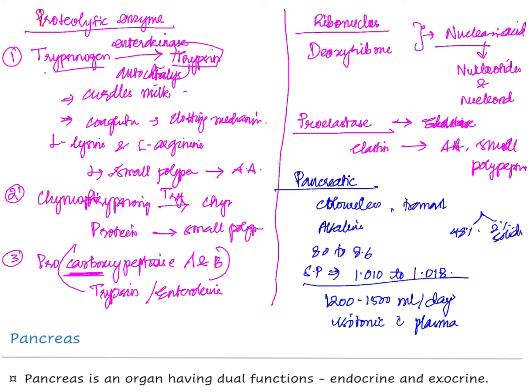The pancreatic juice contains nearly 98% water and 2% solids. The solids include enzymes and electrolytes. The electrolytes consist of cations — sodium, calcium, potassium, magnesium and zinc ions — and anions, predominantly bicarbonate, followed by chloride, and traces of phosphates and sulfates.